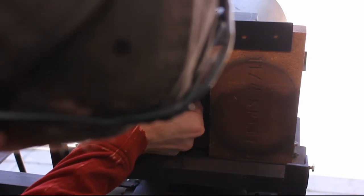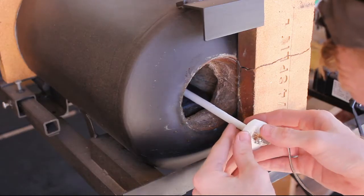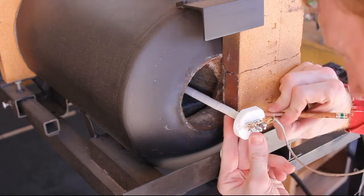So I insert the muffle pipe into the forge and try to get it in a good position so that I can come in through the back and insert my thermocouple.